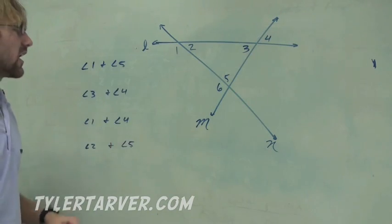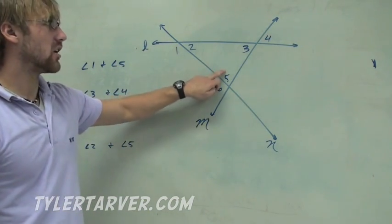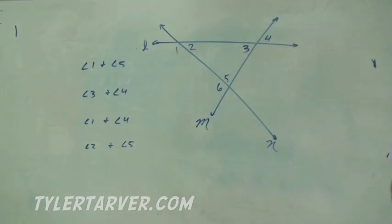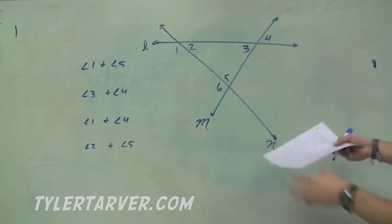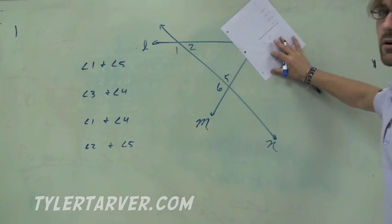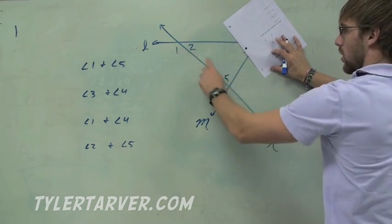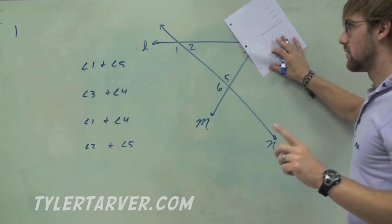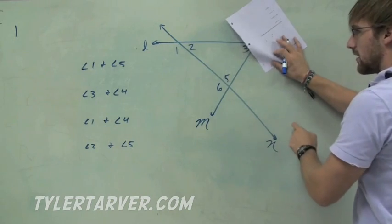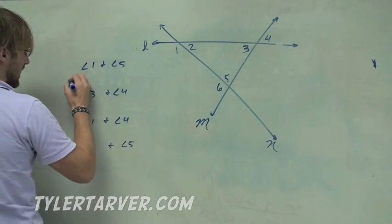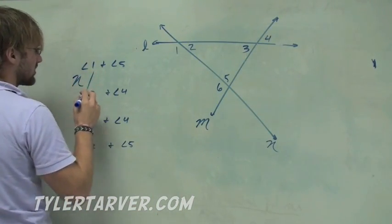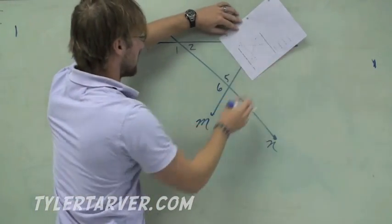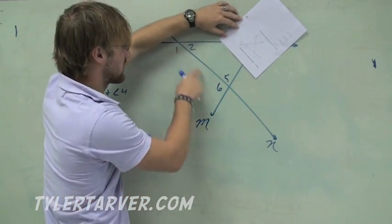First one is angle 1 and angle 5. So we find angle 1 and we find angle 5. When you have them across like this, it gets confusing because you've got this extra side. The trick is cover that up. If you're not using these two angles, cover those up right there. Now, we've got angle 1 and angle 5. What's the one line that touches both of those angles? It has to be line N. So we know our transversal is line N.